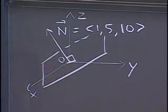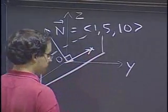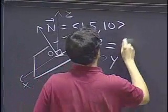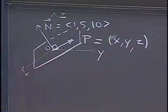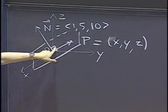When is a point in that plane? Let's say we have a point P at coordinates x, y, z. Well, the condition for P to be in the plane should be that we have a right angle here.